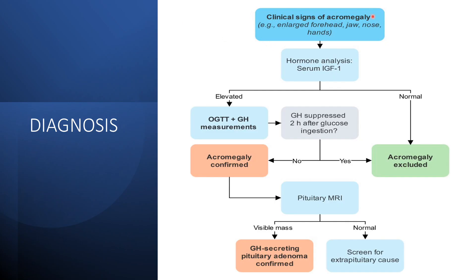To diagnose acromegaly, if clinical signs are present we perform a hormone analysis of serum IGF-1. If levels are normal, acromegaly is excluded. If elevated, we perform an oral glucose tolerance test plus growth hormone measurement. If growth hormone is suppressed 2 hours after glucose ingestion, acromegaly is excluded; if not, it is confirmed. We then perform a pituitary MRI to check for a visible mass. If a mass is present, it is a growth hormone-secreting pituitary adenoma. If the MRI is normal, we screen for extra-pituitary causes.